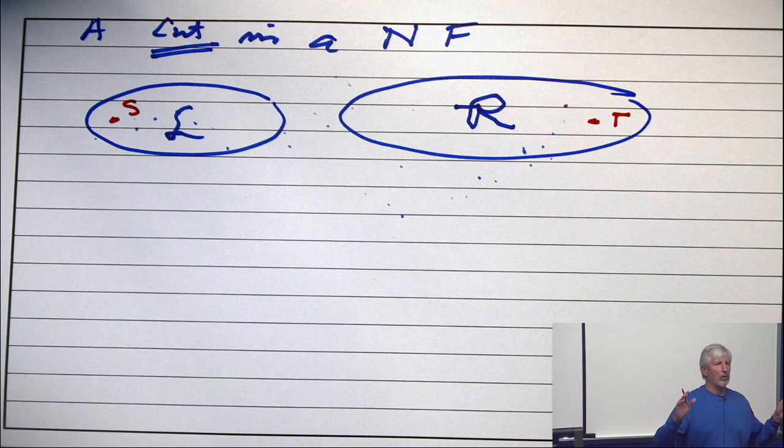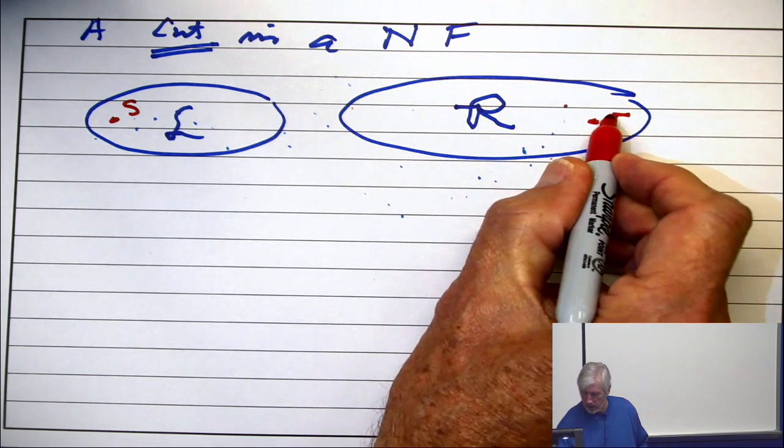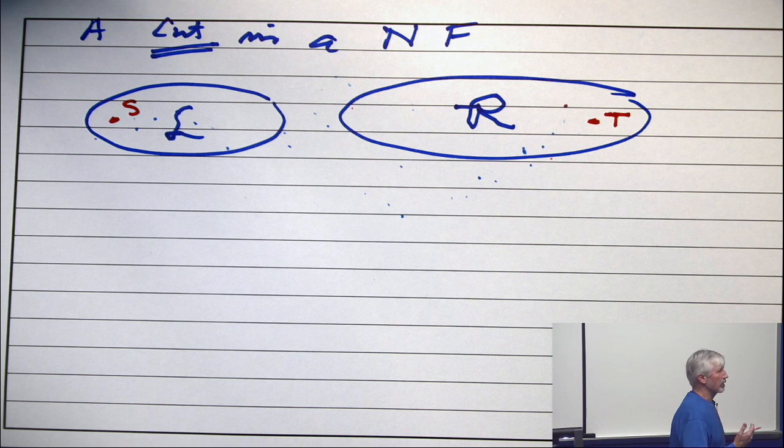A cut is just a partition of the vertex set into two non-empty parts with the source in the left one and the sink in the right one. And the words L and R here, left and right,